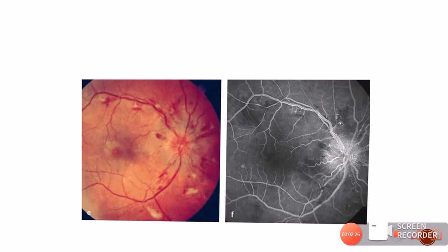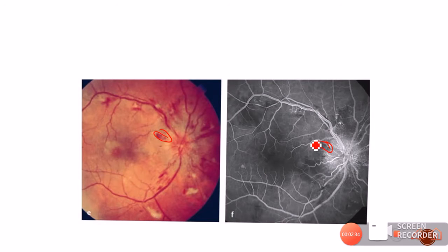This picture is taken from a hypertensive patient who developed CRVO. You can see many flame-shaped hemorrhages and corresponding to those, you can see black areas of blocked fluorescence. Here a flame-shaped hemorrhage corresponds to a black area. Tracing the blood vessel passing through that black area confirms the hemorrhage is sub-retinal, because the retinal vessel is not blocked.